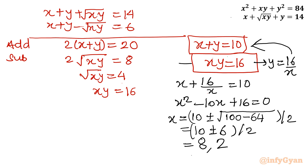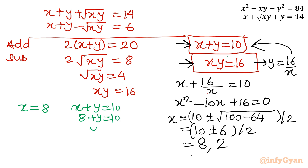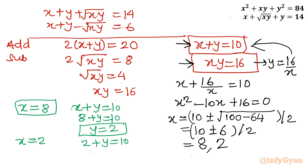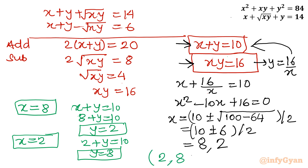Using x + y = 10 to find y: when x = 8, y = 2; and when x = 2, y = 8. So the solutions are (x, y) = (2, 8) and (8, 2). This completes method number 1.